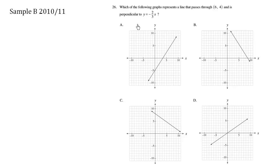Which of the following graphs represents a line that passes through (6,4) and is perpendicular to this line here?